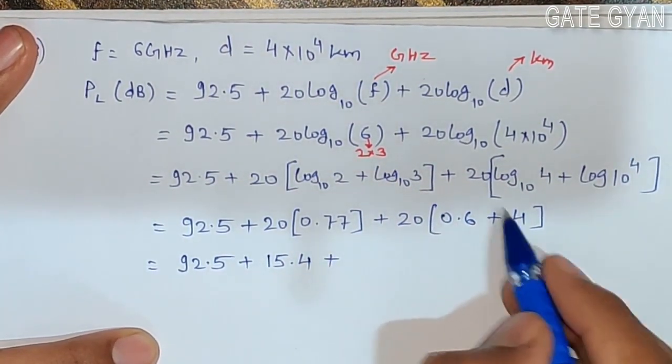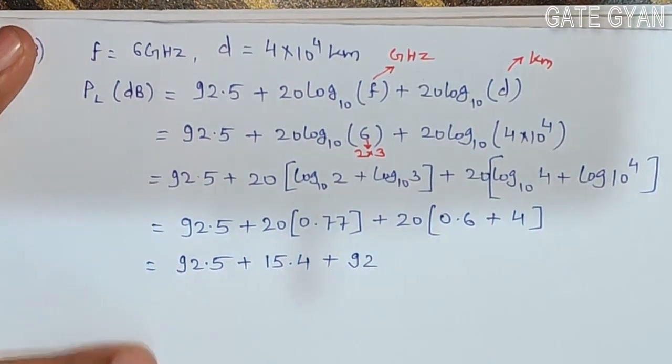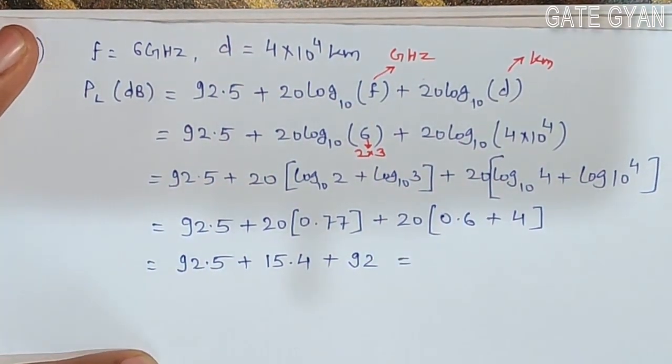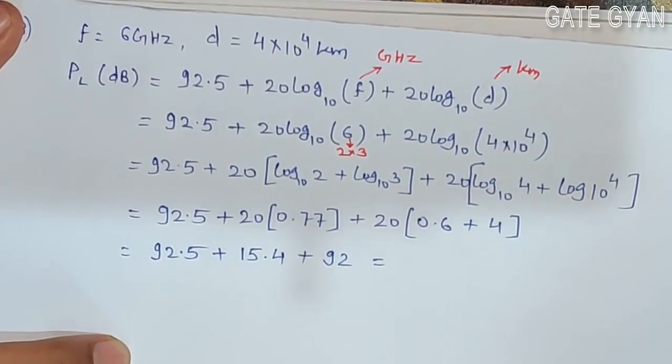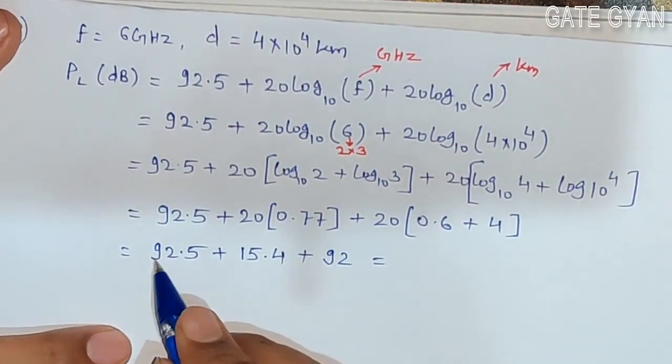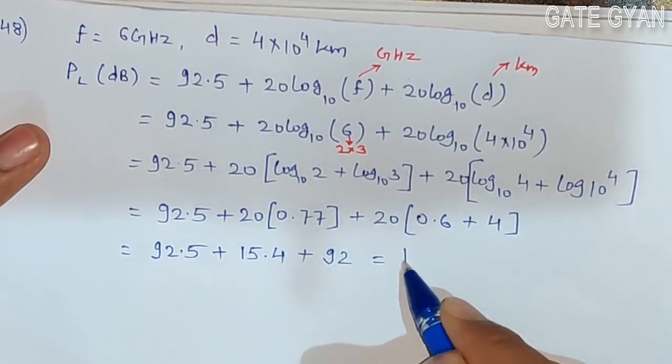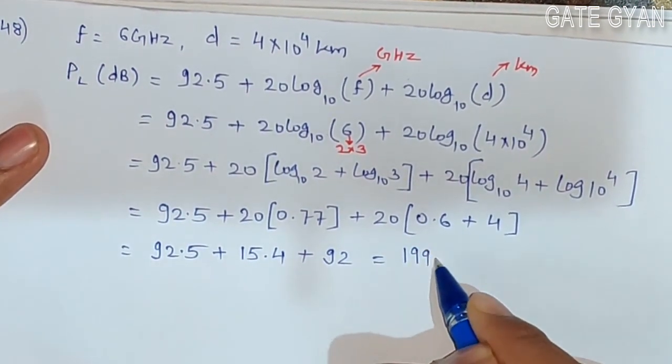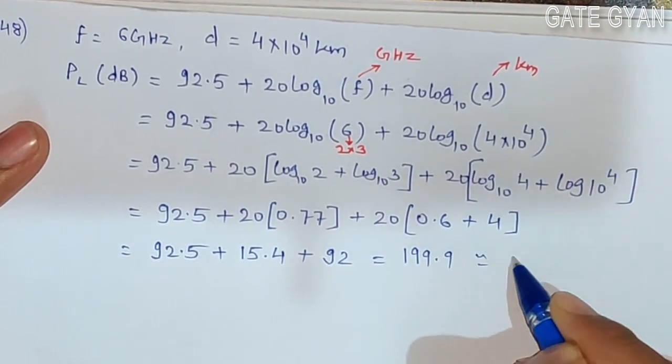20 and 4.6 is 2.46. If you add it, finally you will find that it is approximately equal to 92 and 92, which is 184, and 199.9.